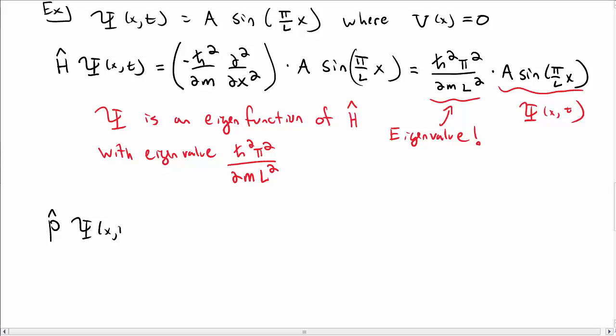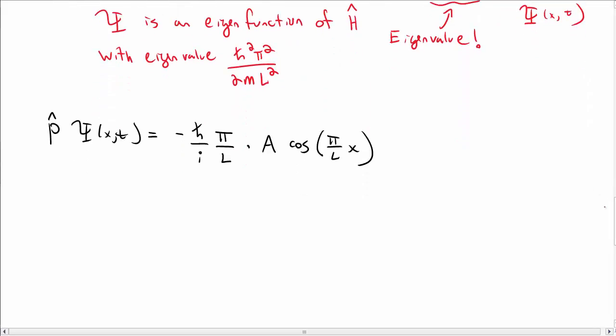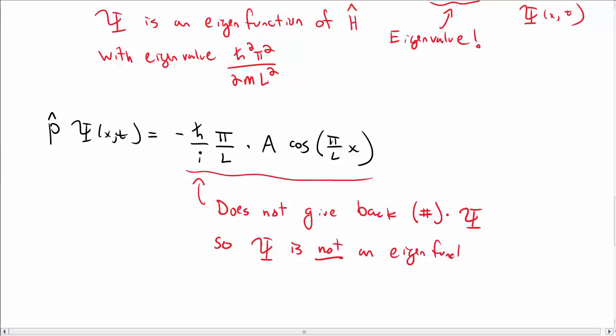Is this an eigenfunction of the momentum operator? We could take p hat times psi, which is minus h bar over i, and then d by dx, which brings out pi over l times a cosine of pi x over l. So notice that this is not just some number times the original wave function back again, because we have a cosine instead of a sine. So we would say capital psi in this case is not an eigenfunction of the momentum operator, even though it's an eigenfunction of the Hamiltonian.